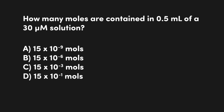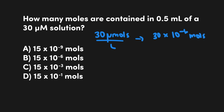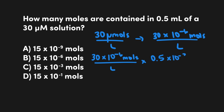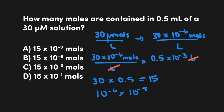For example, let's look at this question: how many moles are contained in 0.5 milliliters of a 30 micromolar solution? We start with the 30 micromolar, since that's micromoles per liter, and we want to solve for moles. We convert micro into 10 to the negative 6, so this becomes 30 times 10 to the negative 6 moles per liter. Then we multiply by 0.5 milliliters, which is 0.5 times 10 to the negative 3 liters, to cancel out the liter. We take 30 times 0.5 — that's 15 — then deal with the scientific notation: 10 to the negative 6 times 10 to the negative 3 gives 10 to the negative 9. Our answer is 15 times 10 to the negative 9 moles, which is answer choice A.